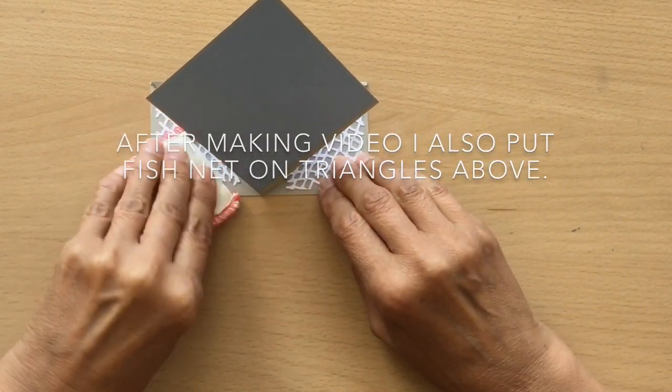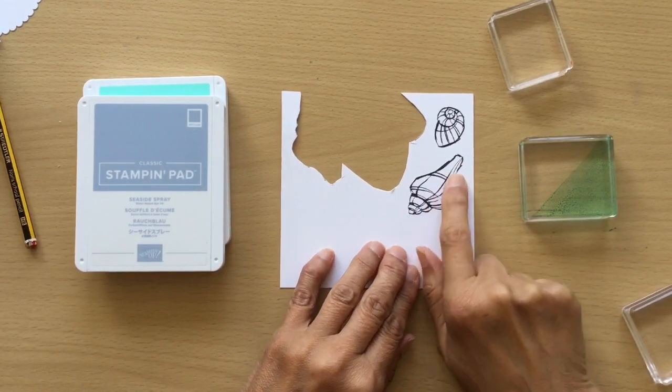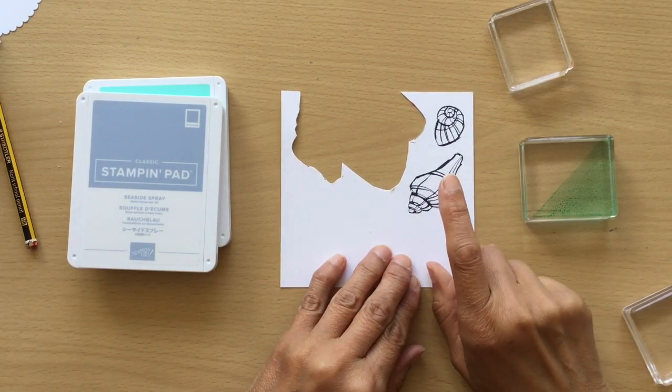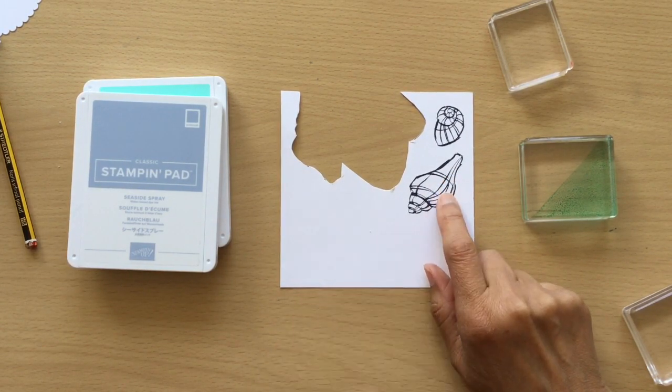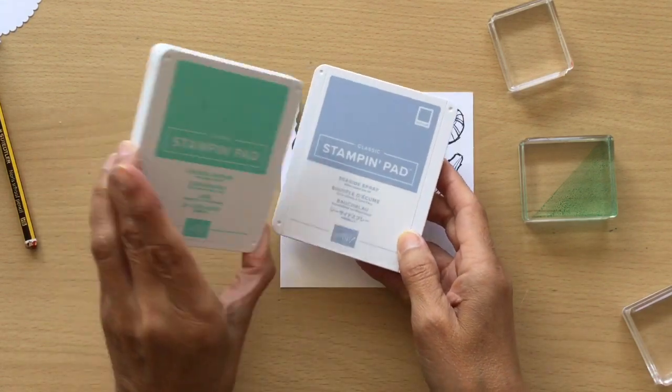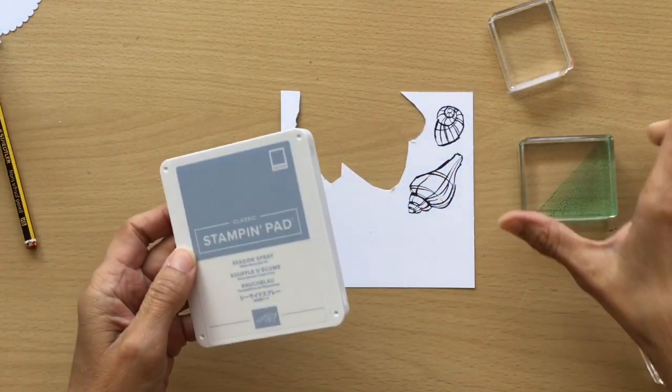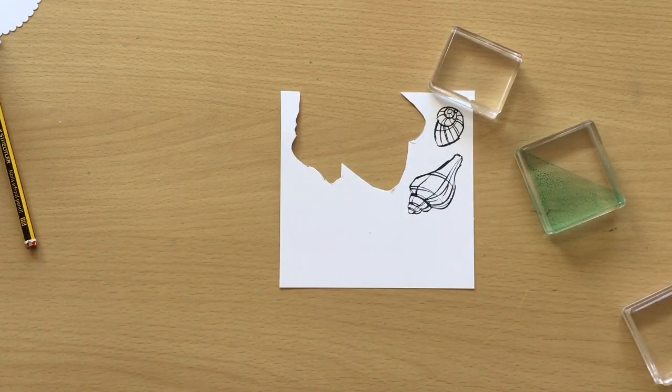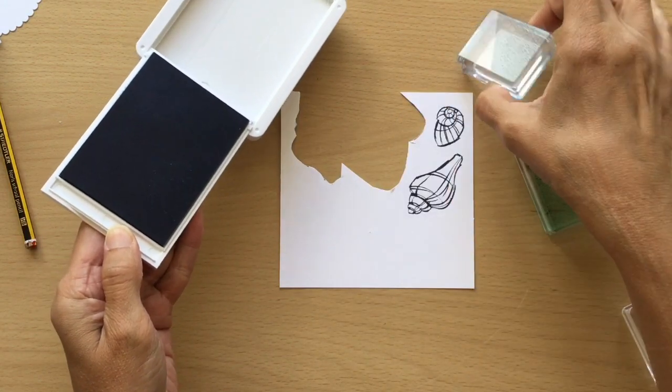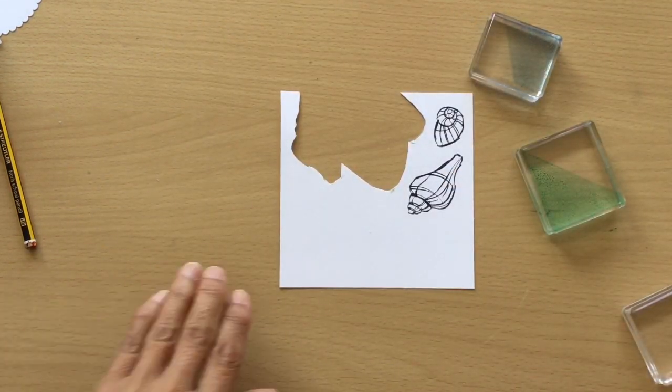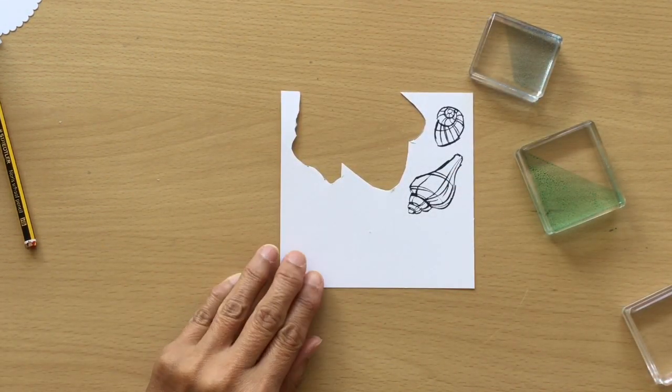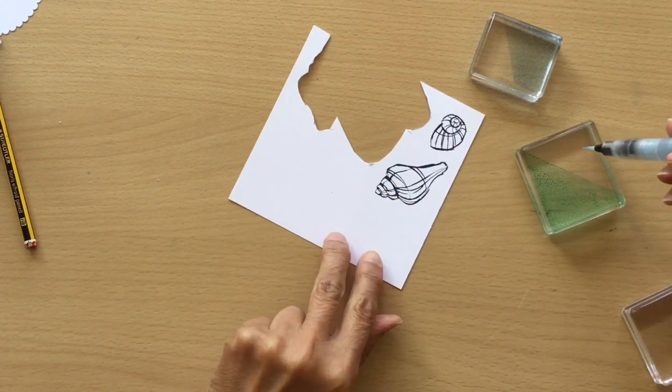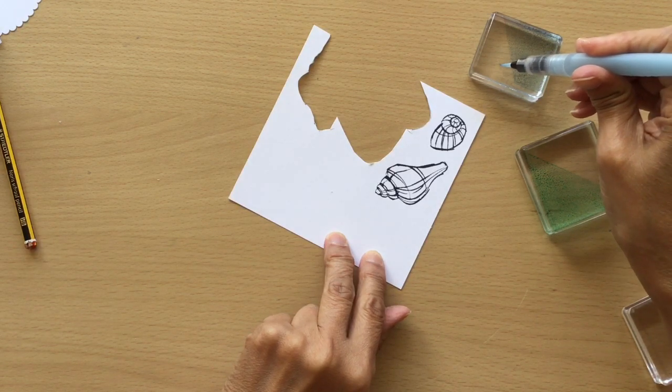I've stamped a couple of my shells onto thick Whisper White and I've used Stazon black ink for this. I've got my Seaside Spray and my Coastal Cabana. I've already dipped my Coastal Cabana into my ink, I'm going to do the same with this. I just use the mount, dip it in, and there we go ready to go. That way you do not damage your ink pads.